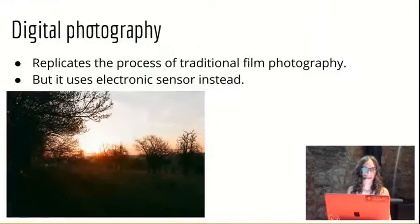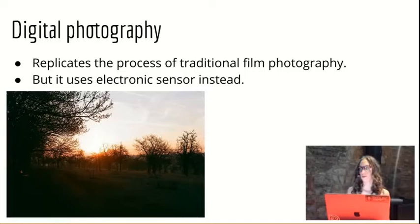If you want to edit your photos, you can. The difference between film and digital photography is very simple — basically the only difference is that you don't use any physical medium in digital photography. There is an electronic sensor instead, which works the same way with ISO sensitivity. When you shoot on auto settings, the camera chooses it for you, or you can use manual and see what happens.